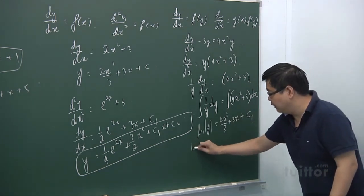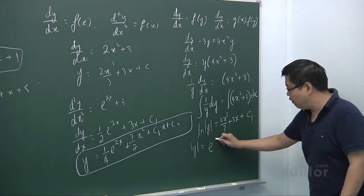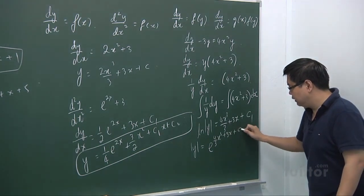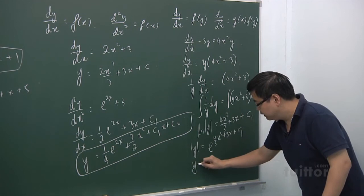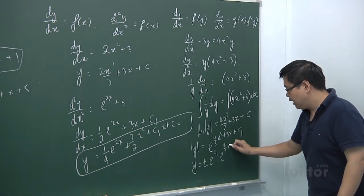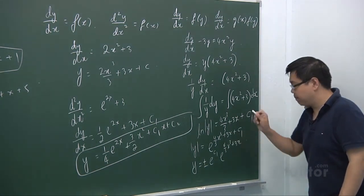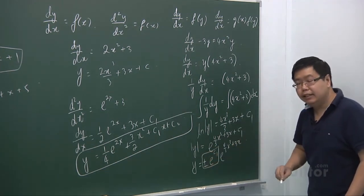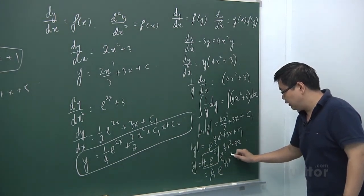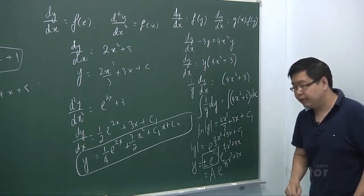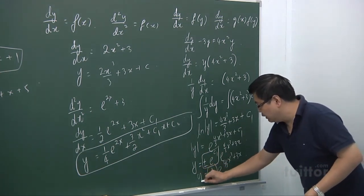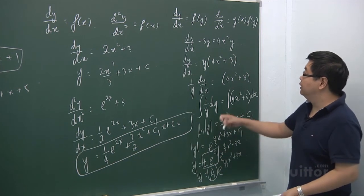Then you take the exponential of both sides, giving e^((4/3)x³ + 3x + c₁). Removing the modulus gives y equals ±e^(c₁) · e^((4/3)x³ + 3x). Finally, we can call ±e^(c₁) a new arbitrary constant A, so y equals A·e^((4/3)x³ + 3x). This is therefore the solution to this differential equation.